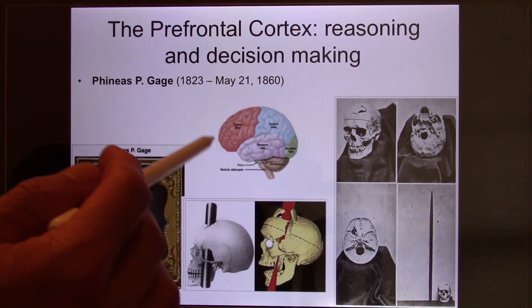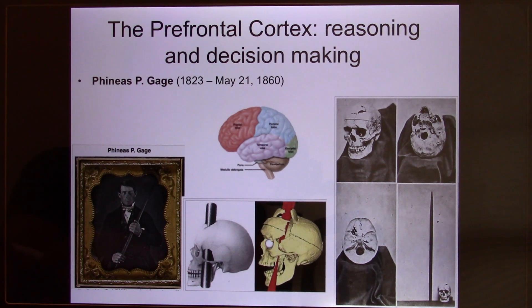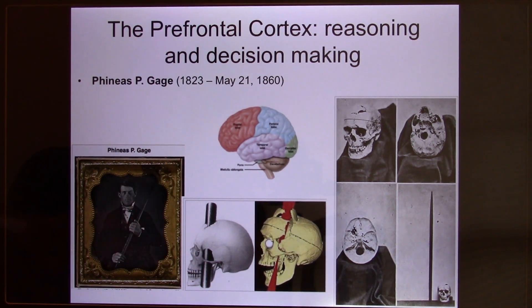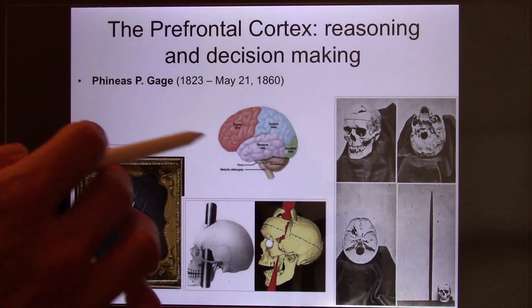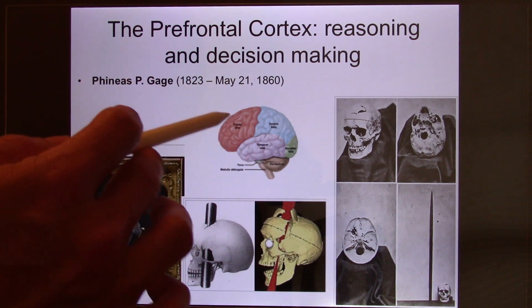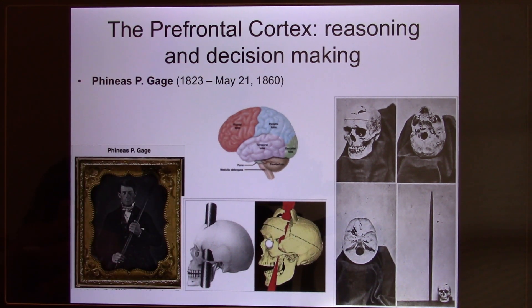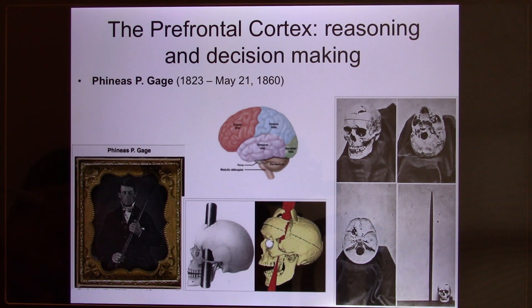So what is the function of the prefrontal cortex? High-level reasoning and decision making — only humans can do this at this level. You can think about your future and plan for it because you have the prefrontal cortex. No other animals can do that. Protect your prefrontal cortex well. Also, this is the brain area that matures pretty late — it takes about 18 years to mature.